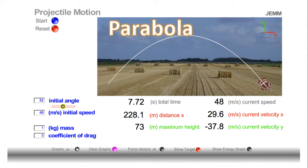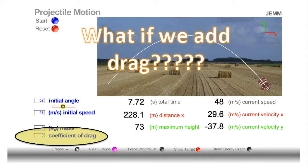So when we assume there's no drag, we get a shape that's parabolic. Now from the video we saw a few moments ago, it's hard to see the shape that the baseball traces out, because remember a baseball does experience drag — a baseball is traveling at very high speed. So the question is: what if we add drag? How does this path change when we consider drag?